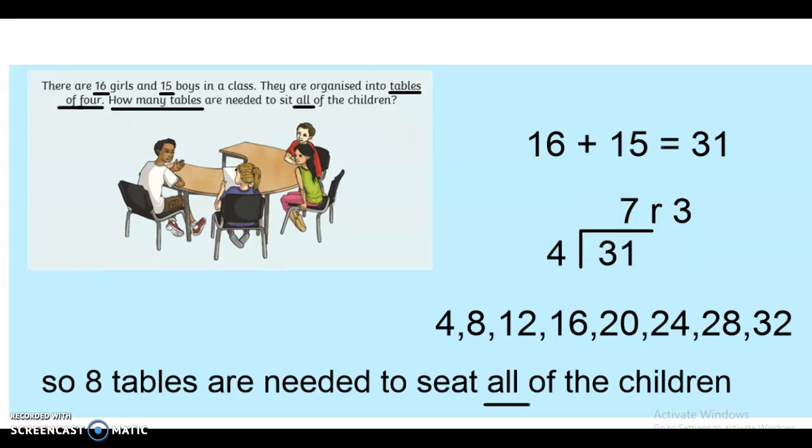Now, this is similar to the problems that you did with me before Christmas. We cannot just have three children left over and say to them, you have to sit on the floor. So we have to round it up. Those three children will need to sit at a table. It's just not going to be a complete table of four. There will be a spare seat. So there will be seven complete tables of four and one table with just three children on. But that doesn't matter. It just asks us how many tables are needed to seat all of the children. Therefore, it is eight tables that are needed. We have rounded up our answer.